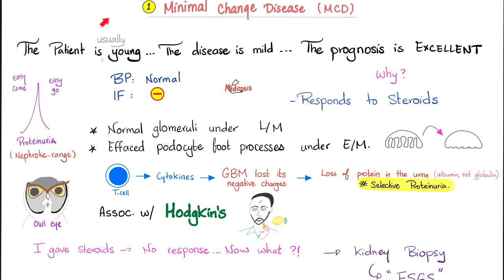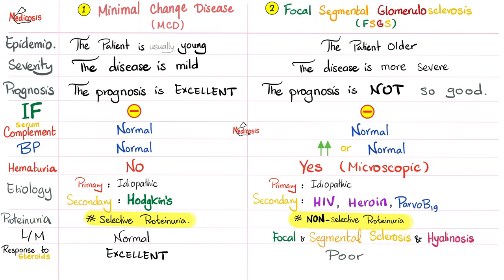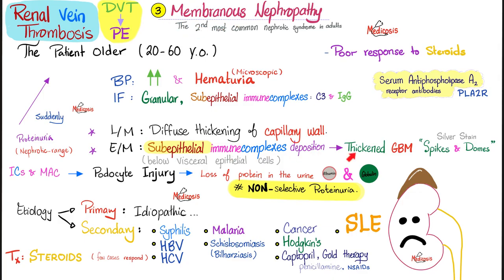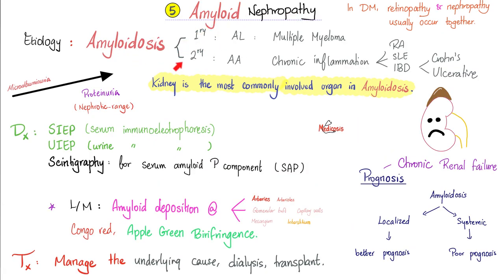We talked about minimal change disease before — the patient is young, prognosis was excellent, remember steroids. Then focal segmental — the patient is older, the disease is more severe, usually HIV, heroin, or parvovirus B19, prognosis is not as good. Then membranous, where the glomerular basement membrane is super thick — spikes and domes — most likely nephrotic syndrome to cause renal vein thrombosis, DVT, PE. If you have chronic uncontrolled diabetes for more than 10 years, you get diabetic nephropathy — give ACE inhibitors and manage the diabetes; hyaline arteriolosclerosis, Kimmelstiel-Wilson nodule. Amyloid nephropathy — Congo red, apple-green birefringence; you cannot treat it without treating the underlying disease.